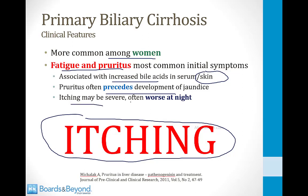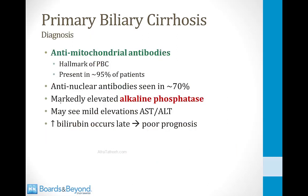The itching is often severe and can be worse at night. Any cause of biliary obstruction can raise the level of serum bile acids and cause itching. But in primary biliary cirrhosis, itching is often the initial complaint prior to the development of jaundice or right upper quadrant pain that might tell you you're dealing with a biliary disorder. There is a review article referenced on screen if you want to learn more about how bile acids in primary biliary cirrhosis lead to pruritus.